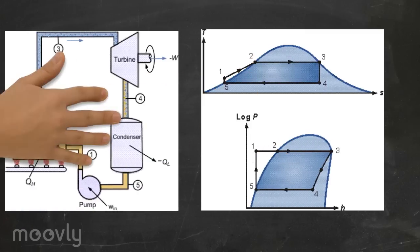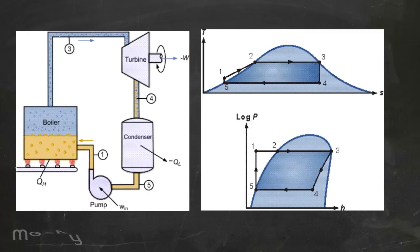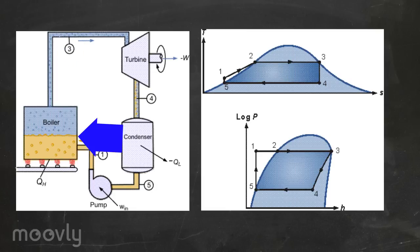Here is the idealized Rankine cycle, and to the right is the pressure enthalpy and temperature entropy diagram. The Rankine cycle operates in the following steps. In step 1-2-3, isobaric heat transfer occurs. High pressure liquid enters the boiler from the feed pump and is heated to saturation temperature.